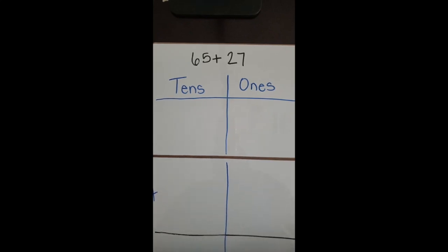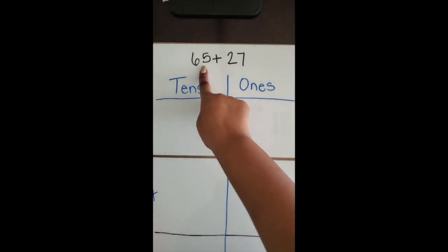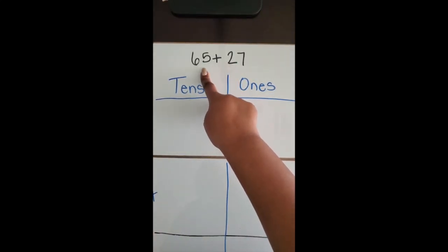This is how you can add two two-digit numbers using base 10 blocks. We have 65 plus 27, so first we're going to build the 65.